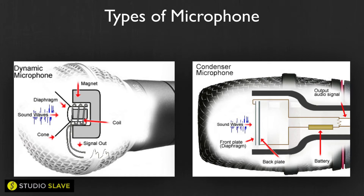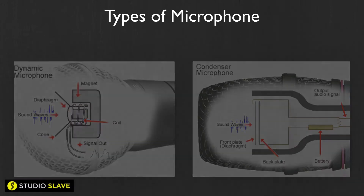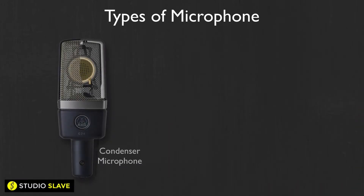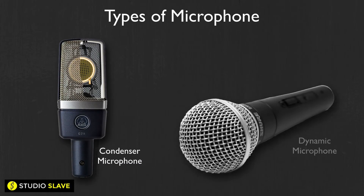The two main types of mic are the condenser microphone and the dynamic microphone. Generally speaking, condenser microphones have a more delicate, lighter diaphragm, while dynamic mics have a slightly more sturdy, either larger diaphragm or one that moves slightly less — so they're harder to damage.